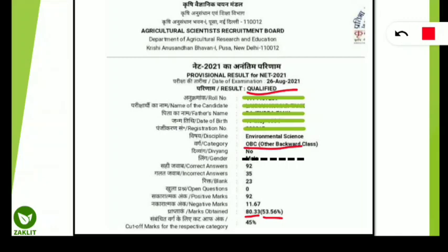The candidate has scored 80.33 marks, that is 53.56% of the total marks. The cutoff marks for the OBC category is 45%, which we already discussed. So this candidate is well above the qualifying marks and has qualified for the ARS NET for this year. Now he or she can apply for assistant professor or lectureship posts whenever vacancies arise in any agriculture institute or agriculture university. This is the ticket to apply for agriculture assistant professor or agriculture lecturer positions specifically.